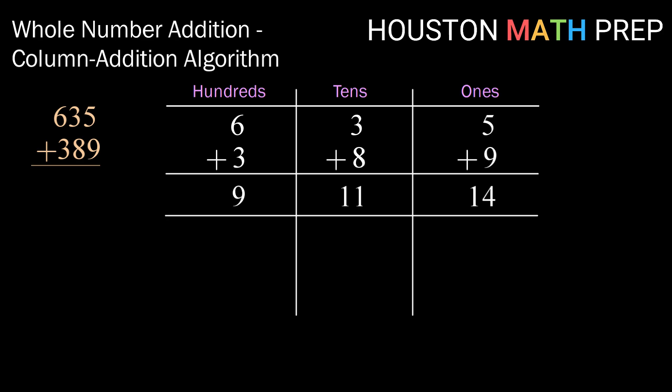Now we're gonna go ahead and sum up each one of those columns. Now again just like in the previous example starting in the ones column if we can we're gonna go ahead and do a regrouping. Since I have 14 ones I'm gonna trade in 10 of those for a tens block. So now instead of having 11 I have 12 in my tens column. Bringing down the 4 that I didn't trade in there's my ones column.